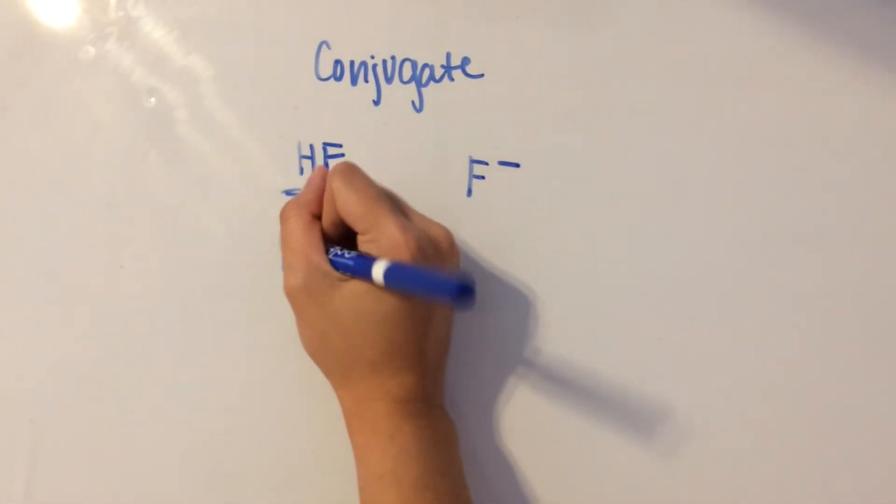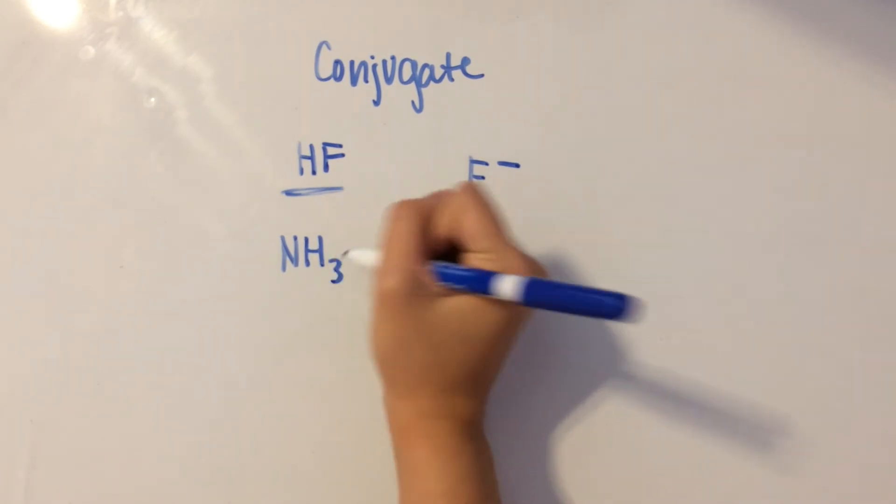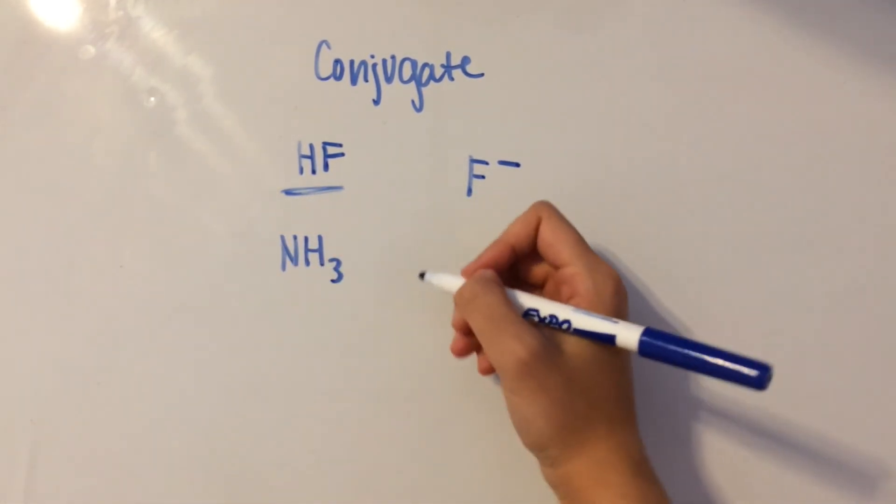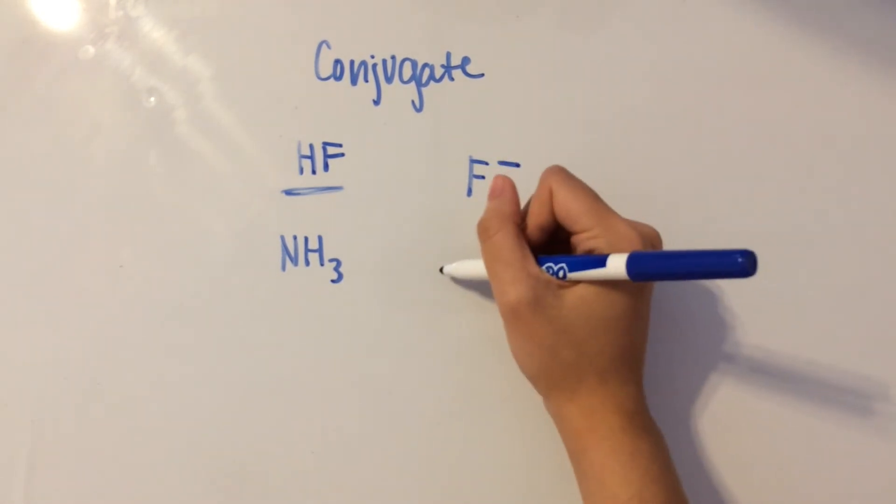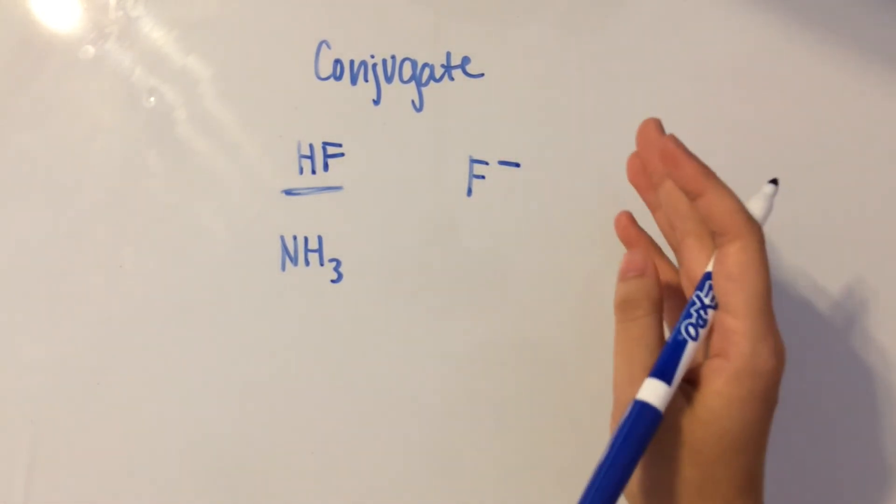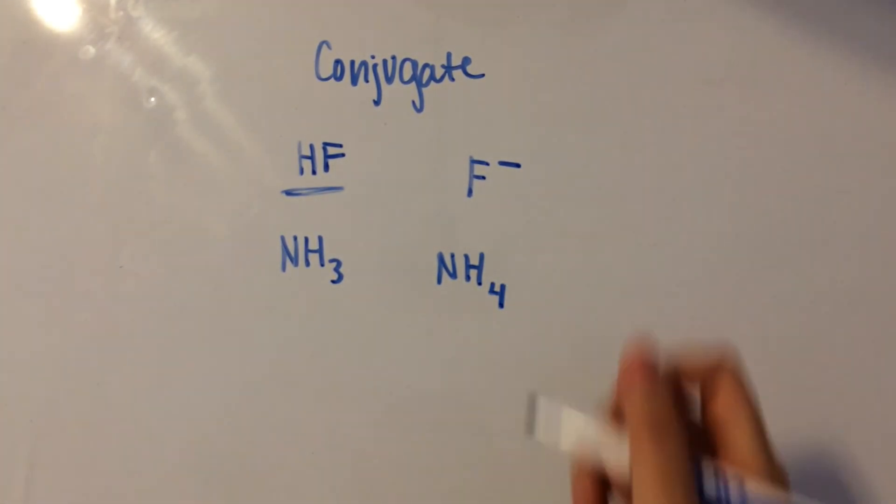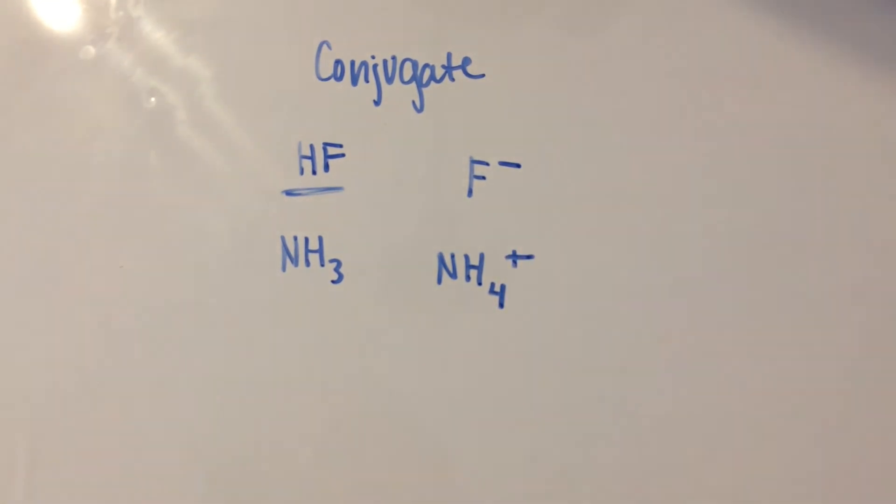Let's do this again with ammonium. We have NH3, which is a base, but its conjugate acid is going to have an H plus added onto it. So instead of NH3, we'll have another H, so that's going to be four. And we have to add a plus because we're adding H plus.